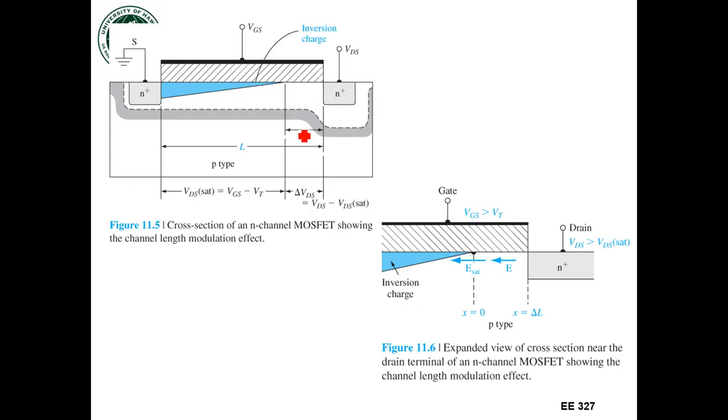So that's represented by this delta L here, so that's the difference between what we initially said the channel length was, and this delta L is the channel is reduced by that delta L because we increased that drain to source voltage by some delta VDS above the threshold voltage.